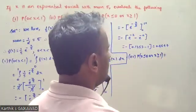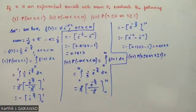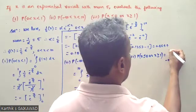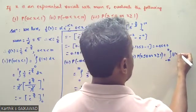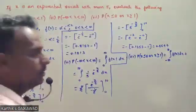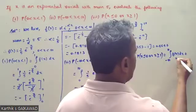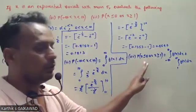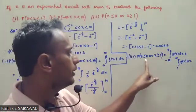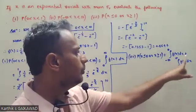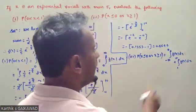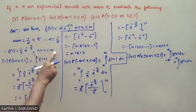P(x ≤ 0 or x ≥ 1) equals the integral from minus infinity to 0 of f(x) dx plus the integral from 1 to infinity of f(x) dx. Since the exponential distribution is defined from 0 to infinity, the integral from minus infinity to 0 of f(x) dx equals 0. So the expression reduces to the integral from 1 to infinity of f(x) dx.